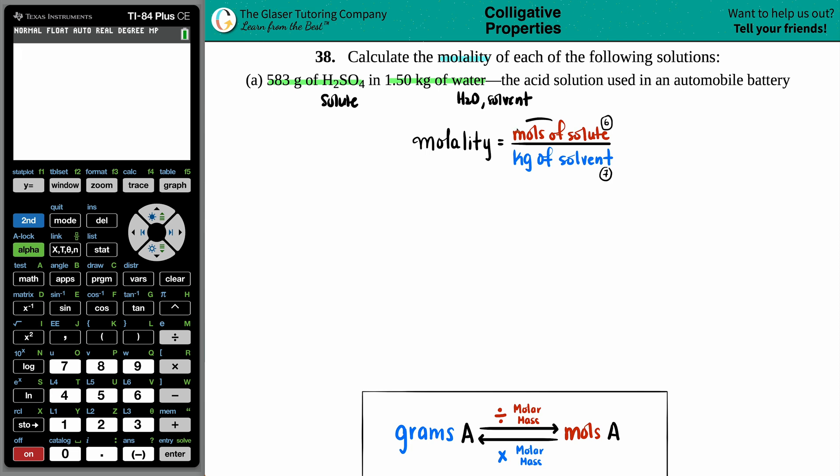So now we know what we're doing with both of them. For the solute, that's the 583 grams of the H2SO4, we need to find the moles. So maybe we'll do that first. How do we go from a gram amount to a mole amount of the same substance?